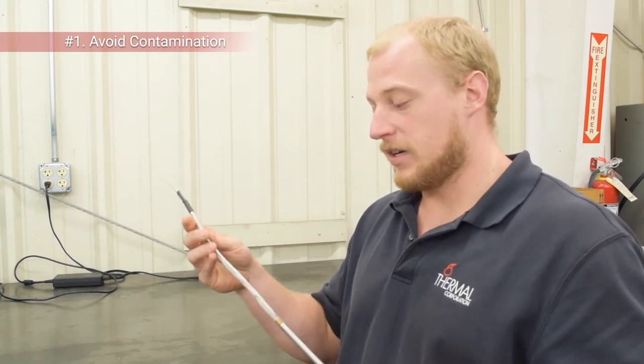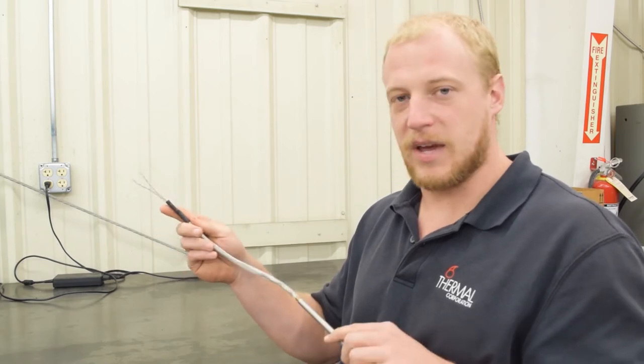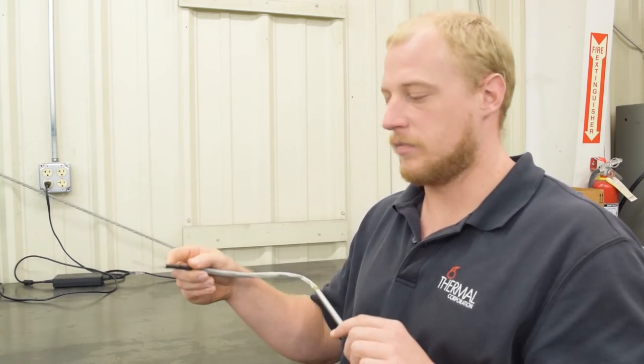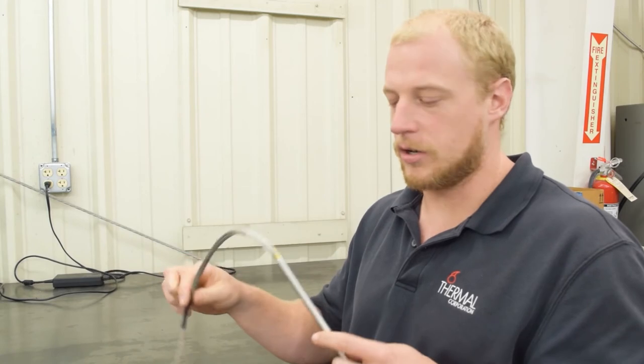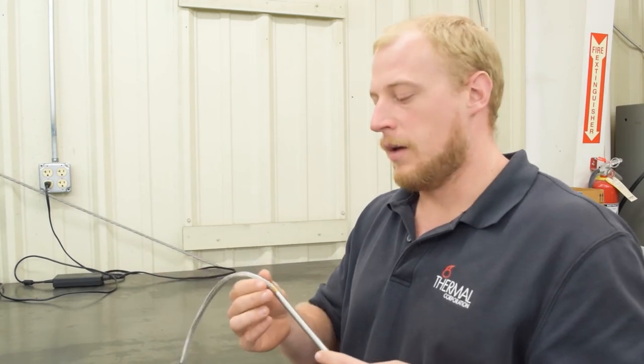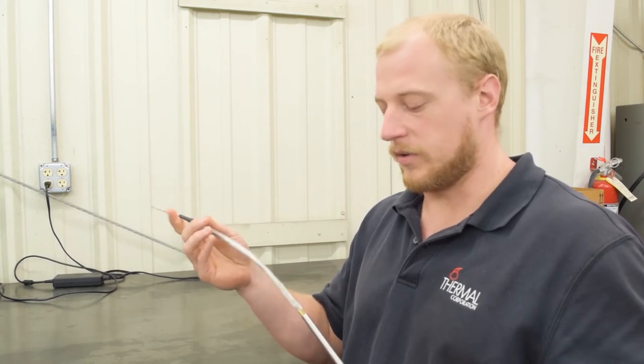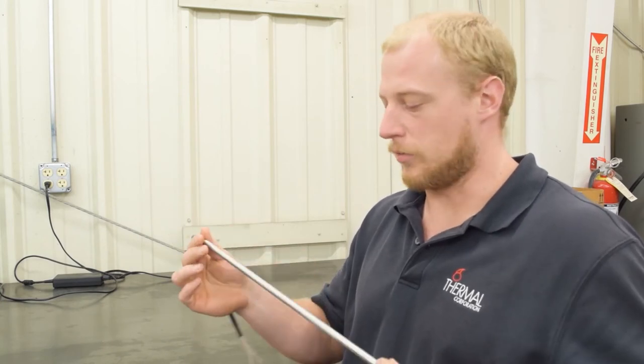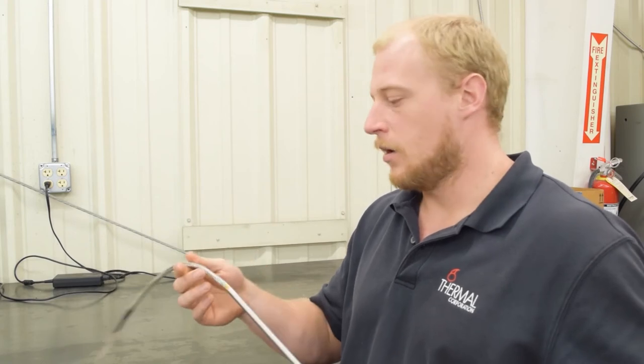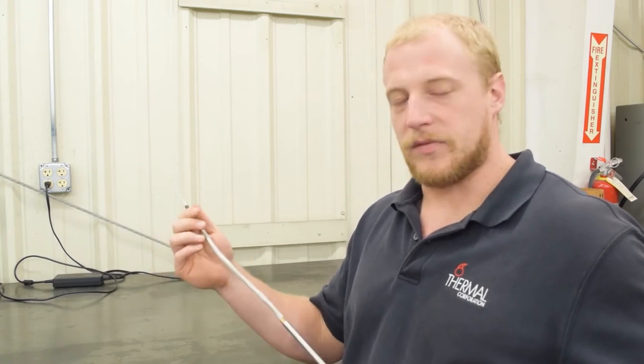If you do happen to get moisture on your heater or leads, you can bake these in an oven at 200 degrees for an hour or so and it should drive that moisture out. But definitely try to avoid getting plastic, oil, or any organic chemical or solvent on or around the leads or the end of the heater. That's the most common failure mode we see.